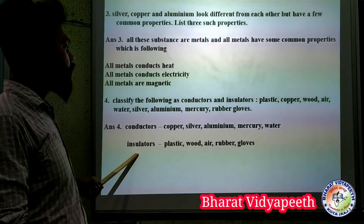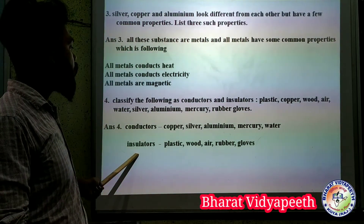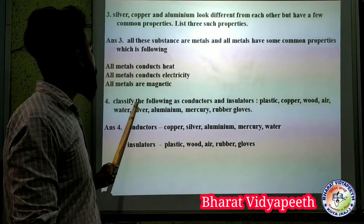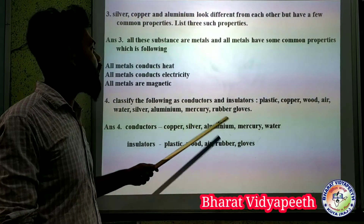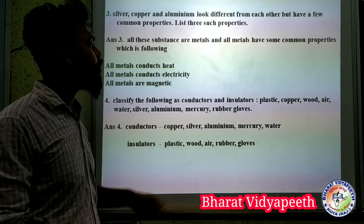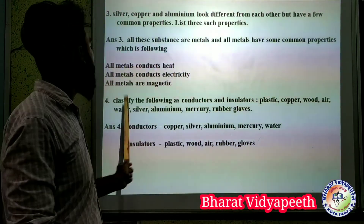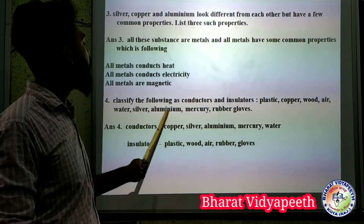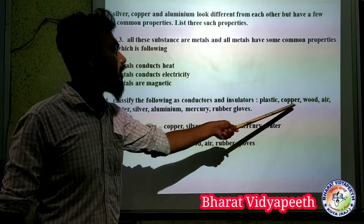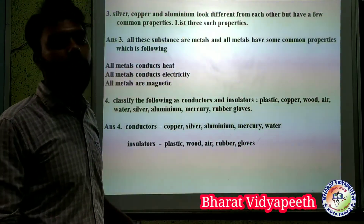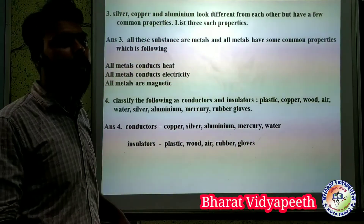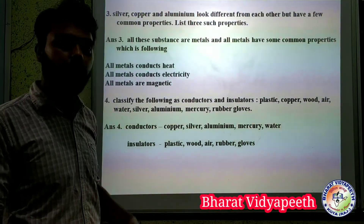Conductor and insulator are classified from the following materials: conductor, insulator, plastic, copper, wood, air, water, silver, aluminium, mercury, rubber, and grease. These are the materials to be classified as conductor and insulator.